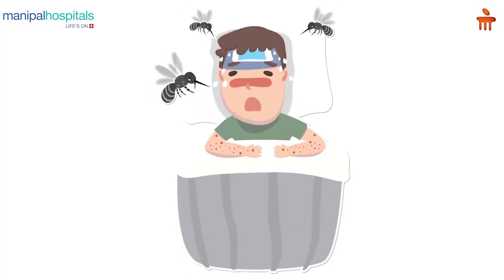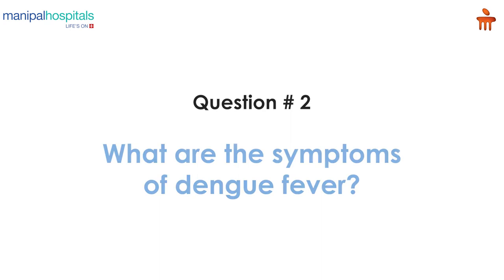Dengue is an infection caused by the dengue virus, which is transmitted from the bite of a mosquito carrying the dengue virus. Symptoms can happen anytime between 4 to 7 days after the bite from a mosquito carrying the dengue virus, and the symptoms can be different for different people. It can vary from mild to severe symptoms.